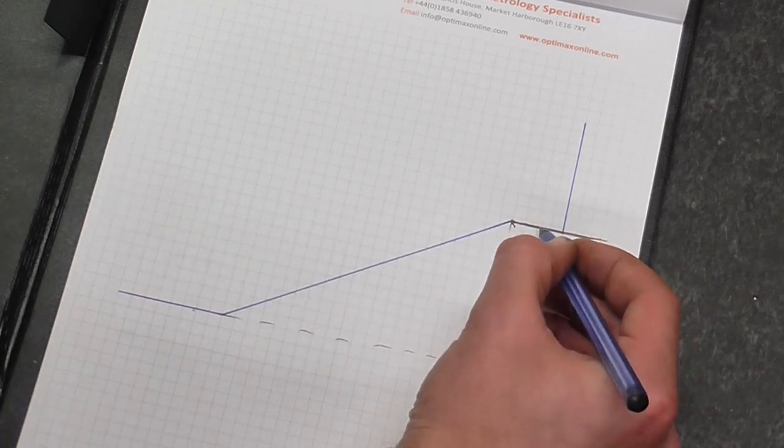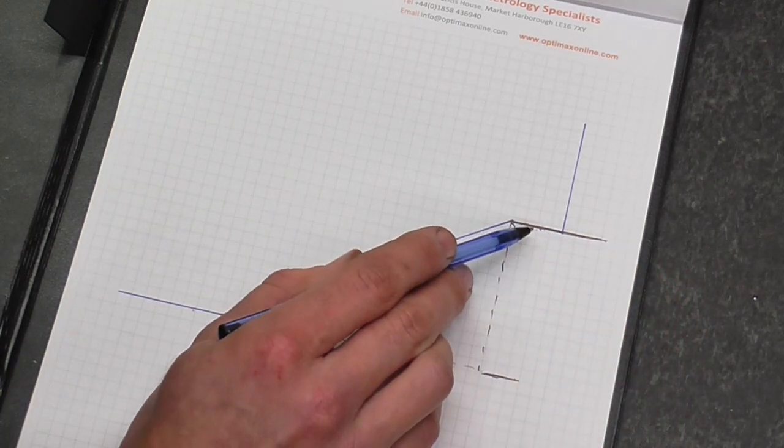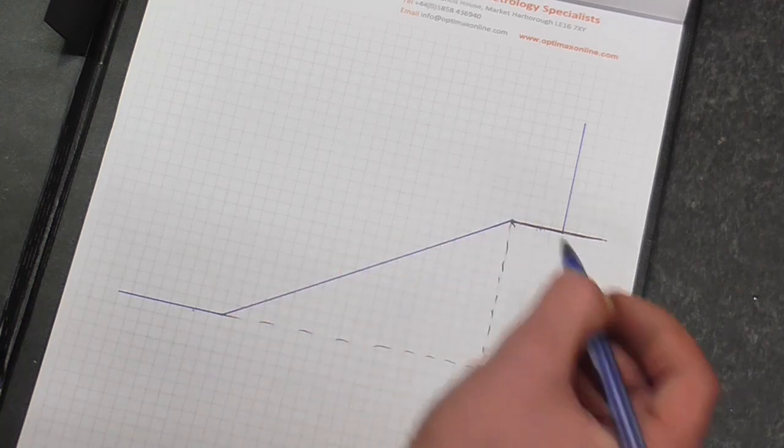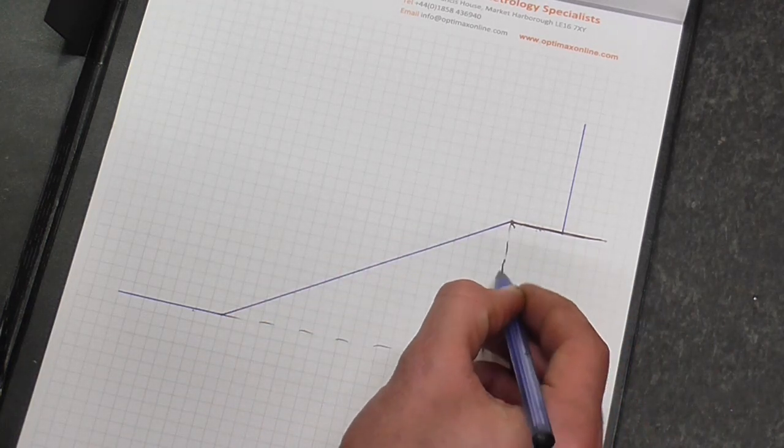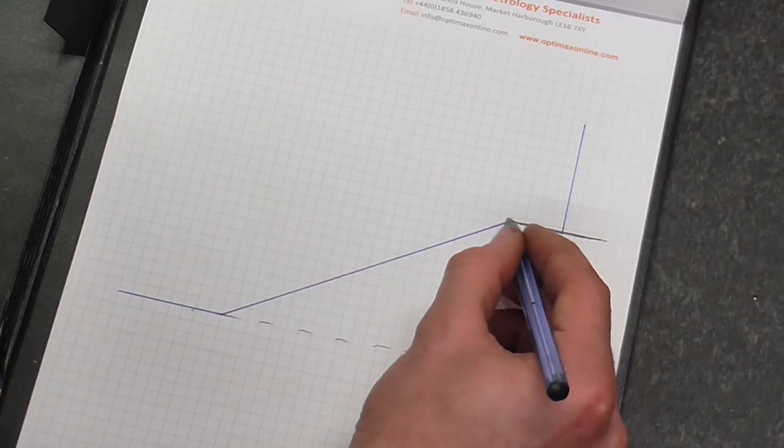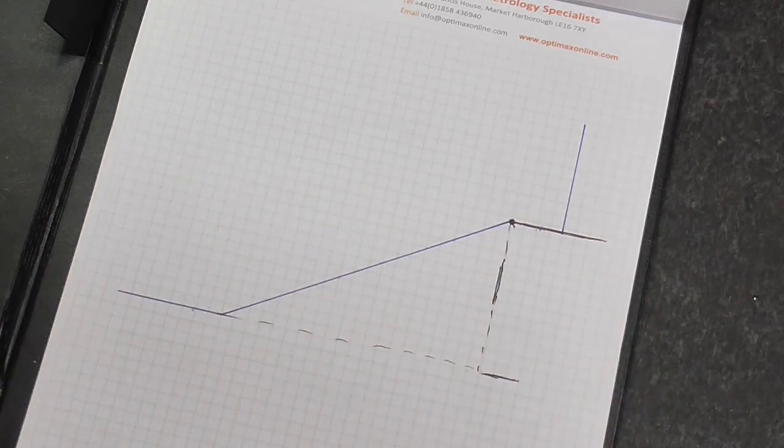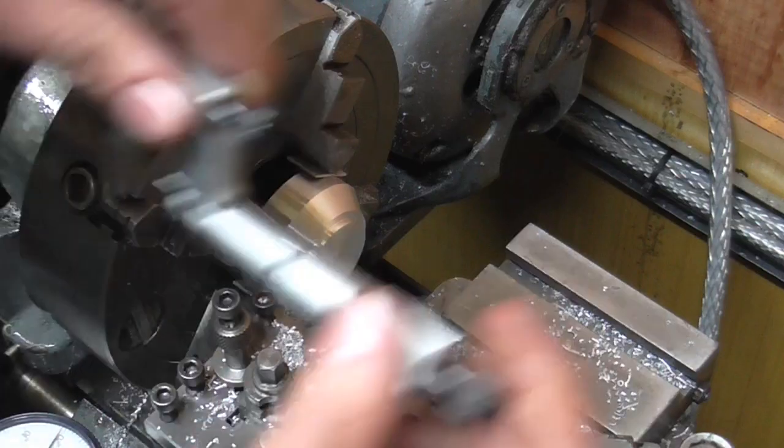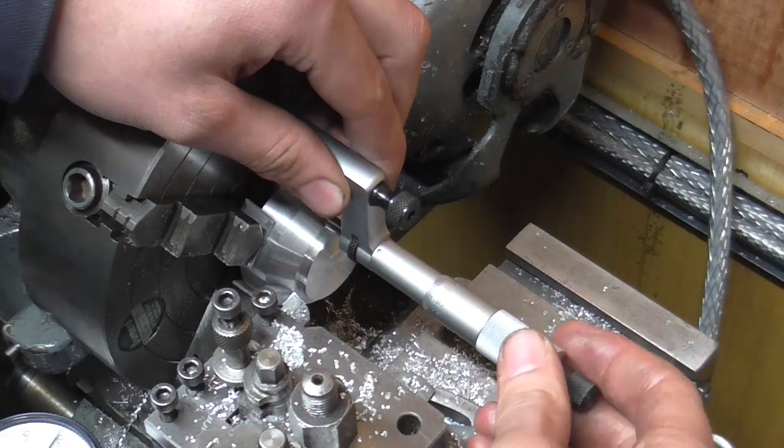I can check that diameter with a micrometer and make sure it's very accurate before I actually work from it. And equally I can check this face back to my datum at the other end of the component to make sure this gauge point is as good as I can get before I take the final cut.